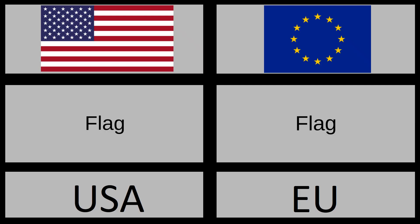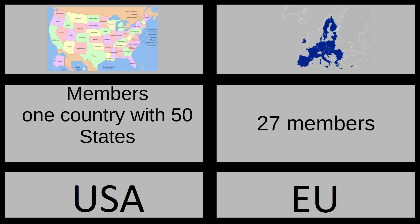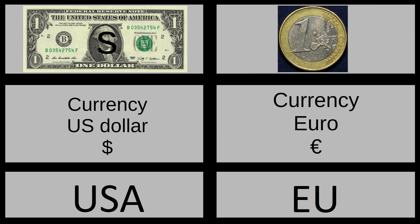The United States of America versus the European Union flag. Members: one country with 50 states versus 27 members. Currency: US dollar versus euro.